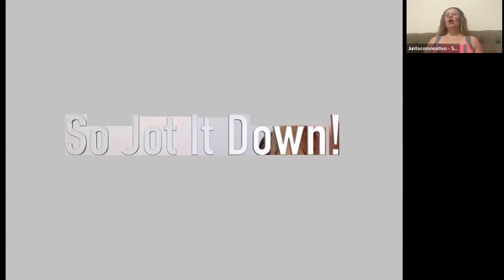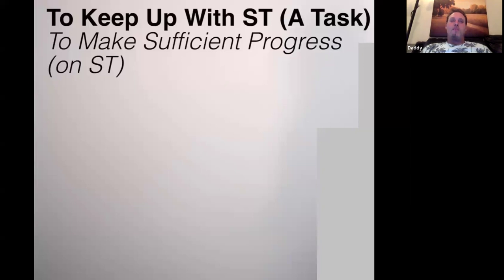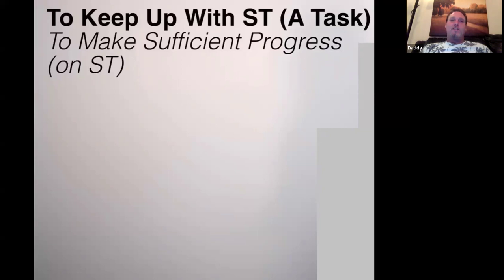This is an important one, so make sure you jot it down! Number five: to keep up with something. This means to make sufficient progress. For example, if you have many orders and your job is to fulfill those orders — if you fulfill all of them, you've kept up with the orders. But if you fulfill fewer than the total, then you haven't kept up — you haven't made sufficient progress. We need to keep up with our tasks because we don't want to fall behind.